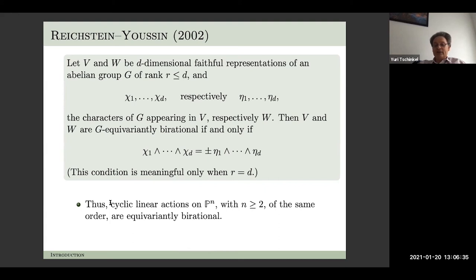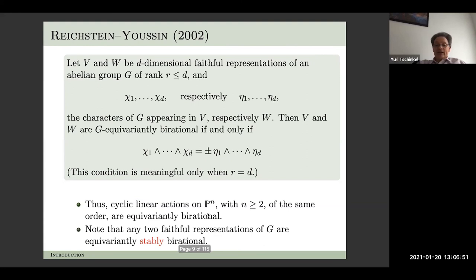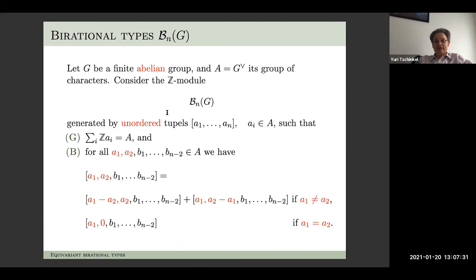If you have a cyclic group acting on P^n for n at least two, then all those cyclic linear actions are equivariantly birational. Also, any two representations of a finite group are equivariantly stably birational — that's a basic fact. So while representations may not be birational, they are stably birational, since all representations are equivariantly stably birational.